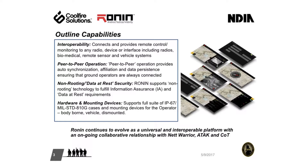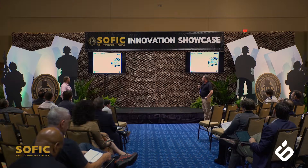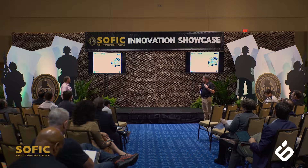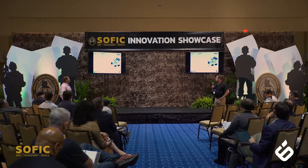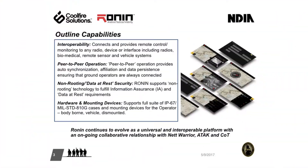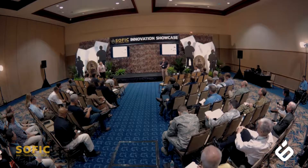In summary, Ronin provides interoperability — we can talk to radios and different devices, work with biomedical sensors, integrate into the CAN bus of vehicle systems, and work with partners like GTAC. Peer-to-peer operations mean we're not dependent upon a server, but we also provide a server application for COP feeds to higher headquarters. It's a non-routing, data-at-rest security accredited system. We have a number of hardware mounting devices for the individual soldier, body-borne, vehicle, and dismounted. We continue to evolve as an interoperable platform with NetWarrior and ATAC.